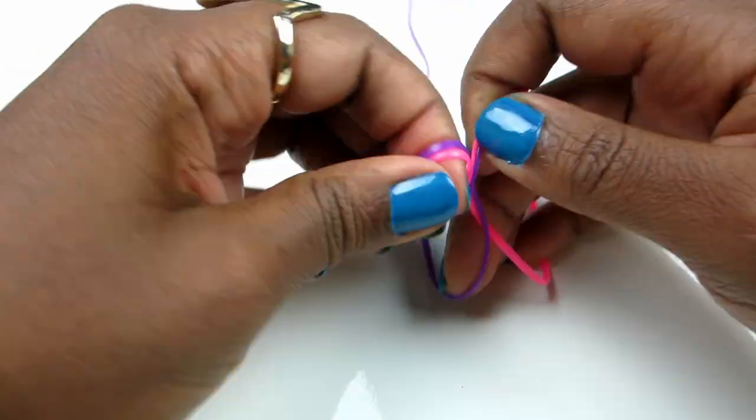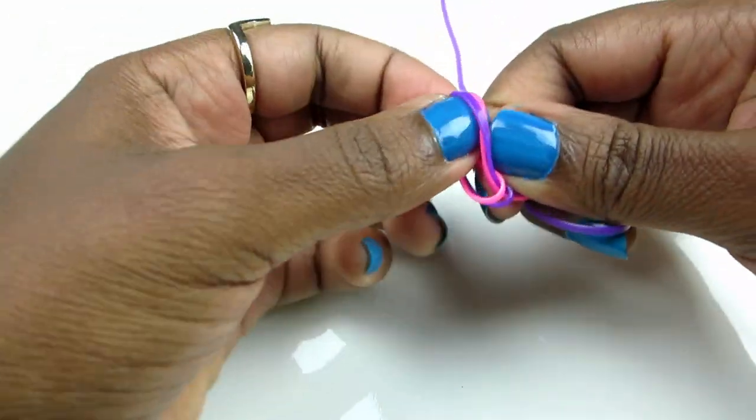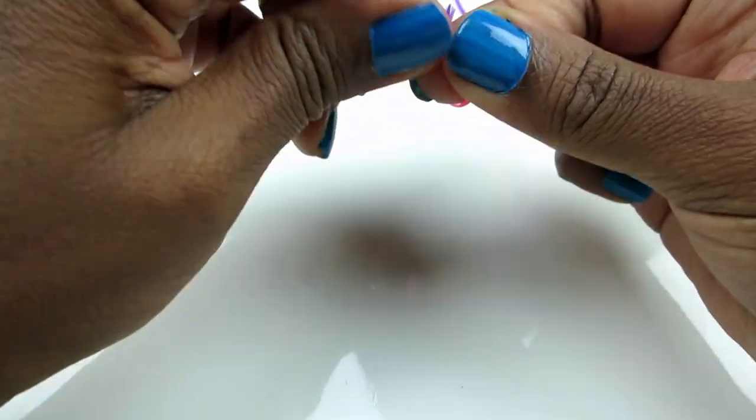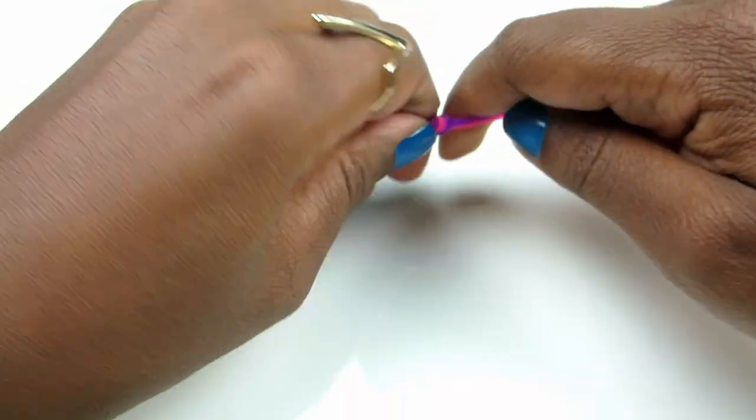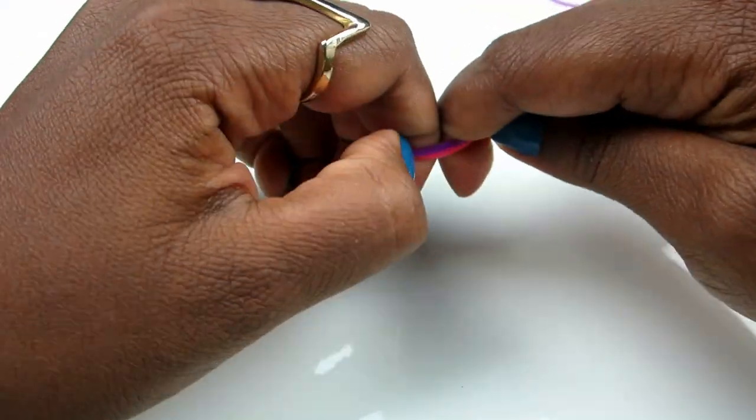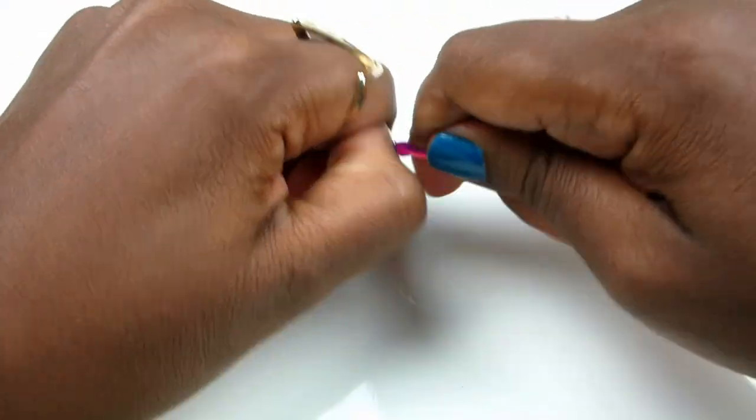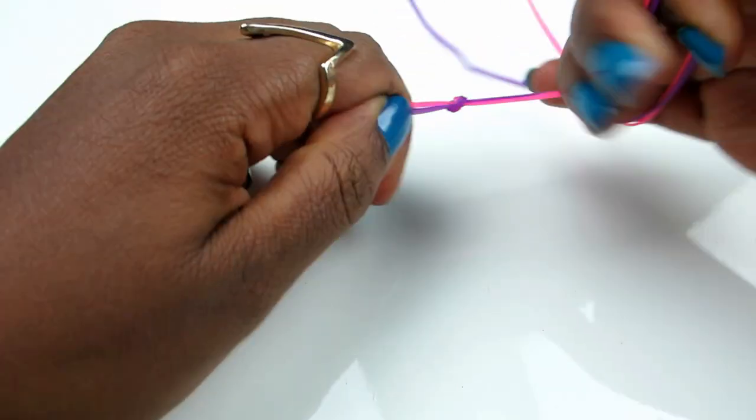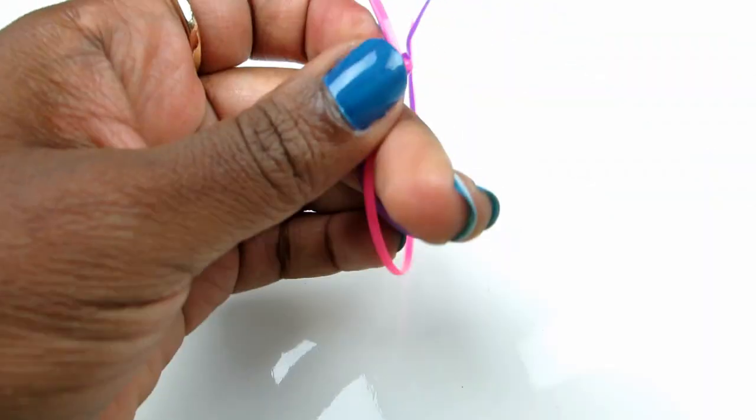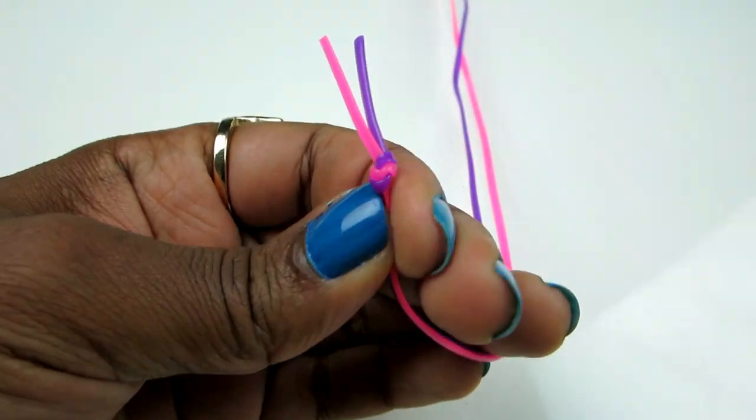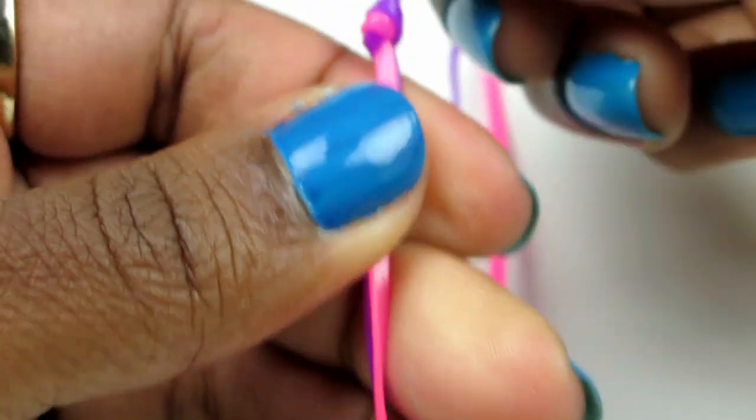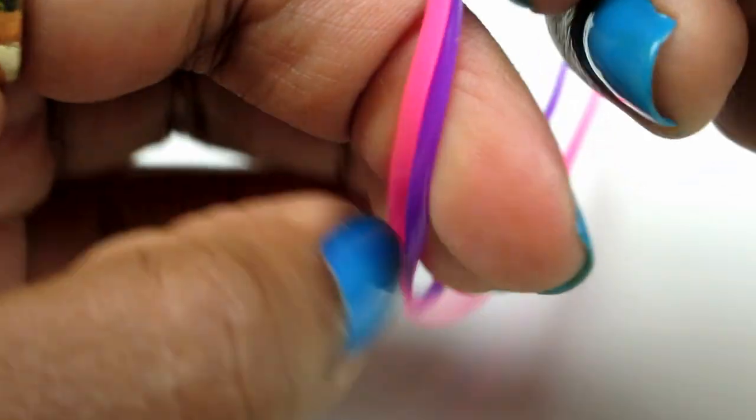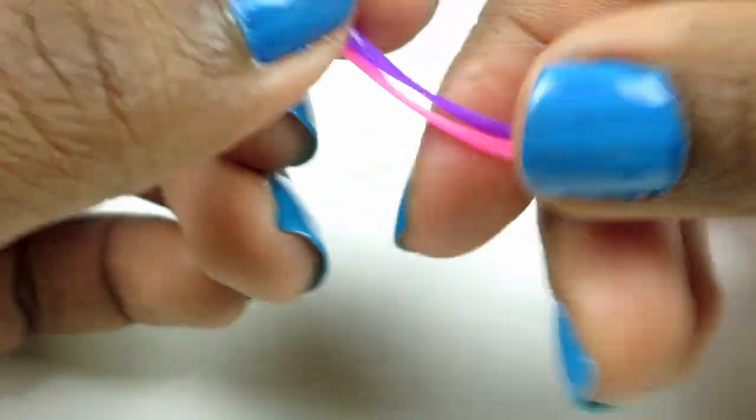Whatever finger works best for you. I'm using my index finger and I'm just going to pull the gimp out with a nice pull so it's nice and tight. So just zoom in a little bit here. This is what my knot looks like and here are my pieces. Let's begin.